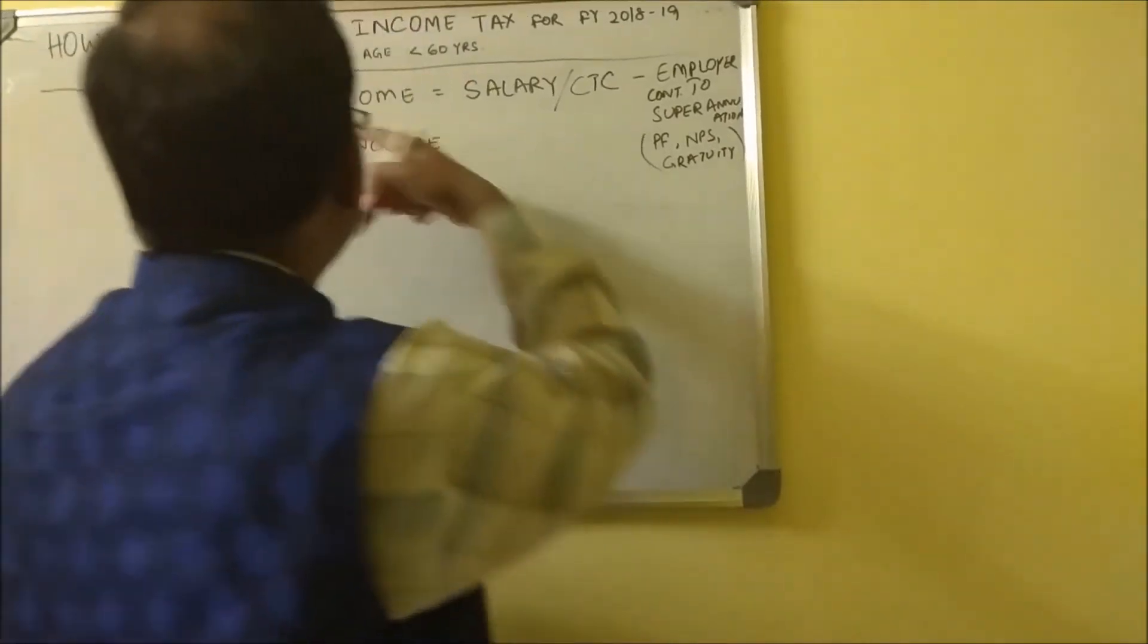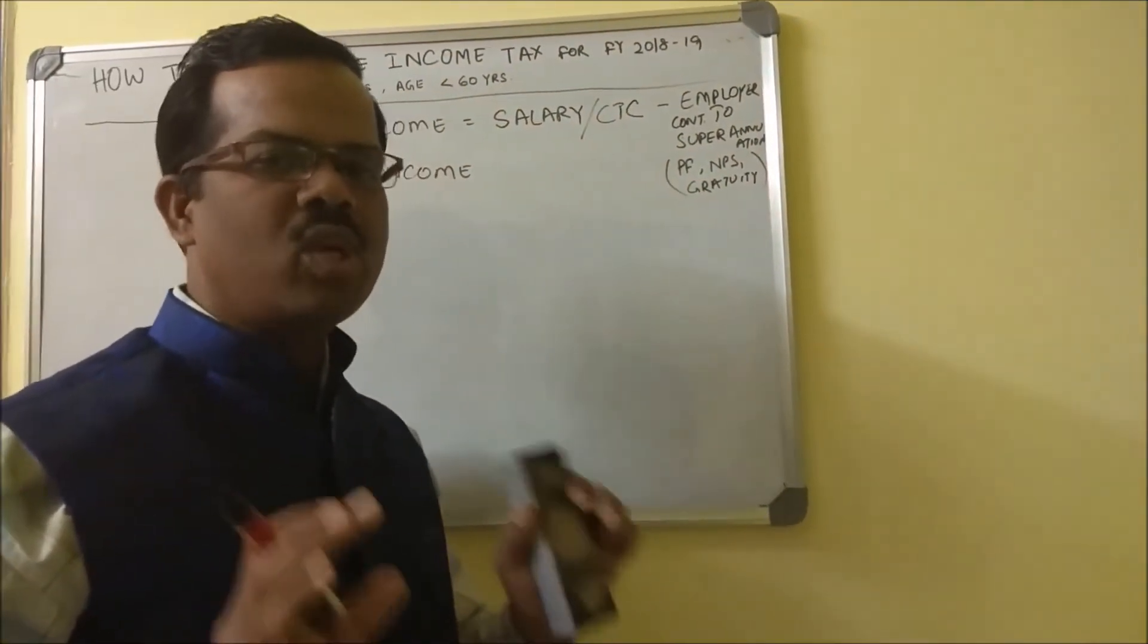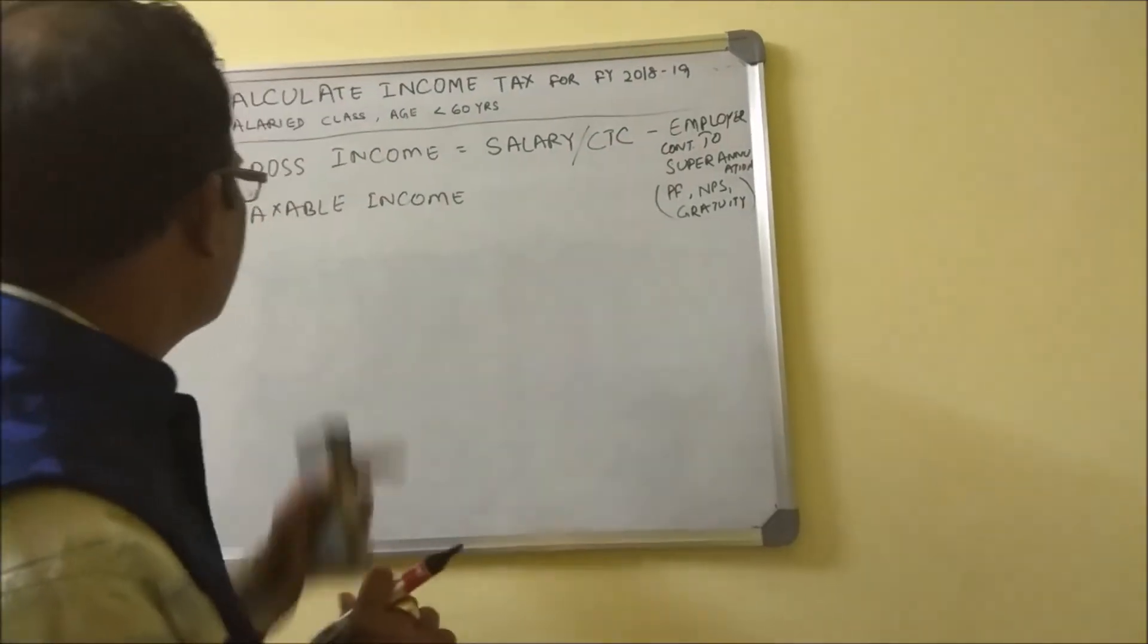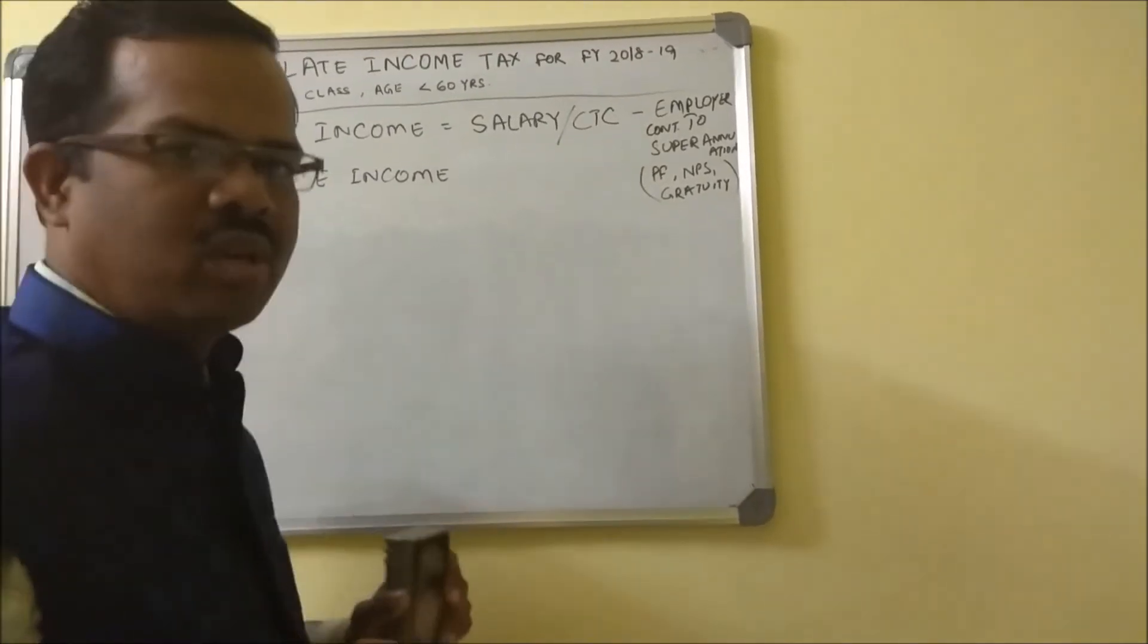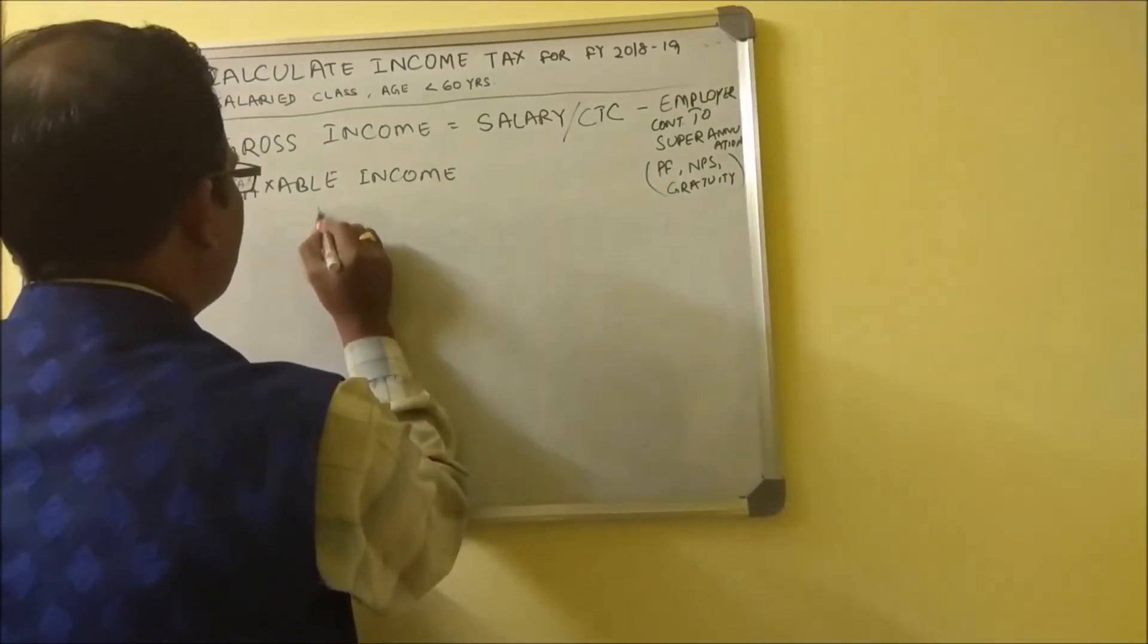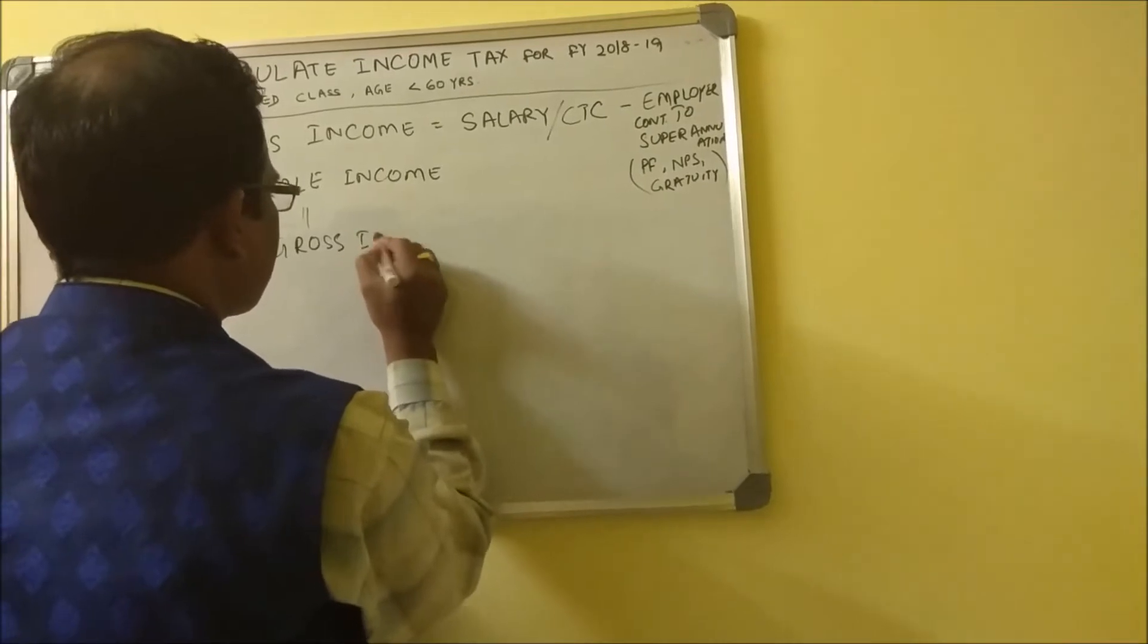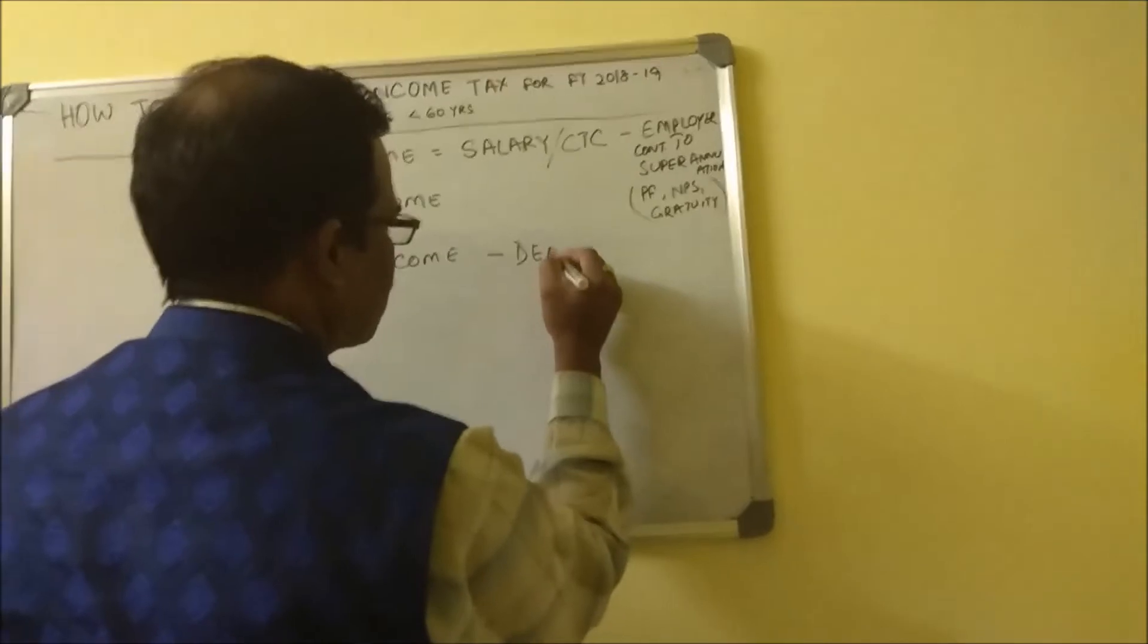Are you going to pay income tax on the entire gross income? No. You will be paying taxes only on the taxable income. What is this taxable income? Taxable income equals gross income minus your allowed deductions.